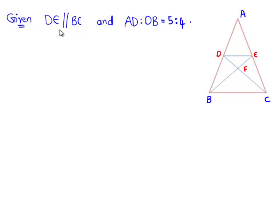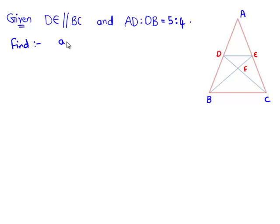In this question, we are given that line DE is parallel to BC and the ratio of AD to DB is equal to 5 is to 4. We have to find out the ratio of the area of triangle DEF to the area of triangle BCF.